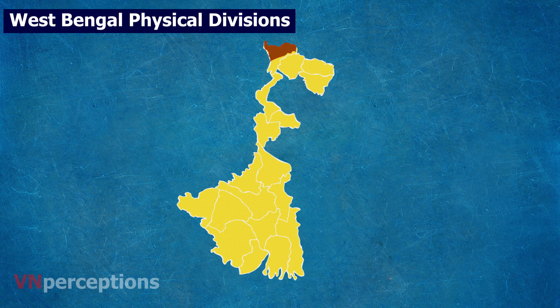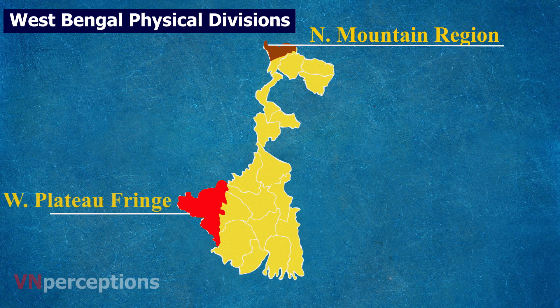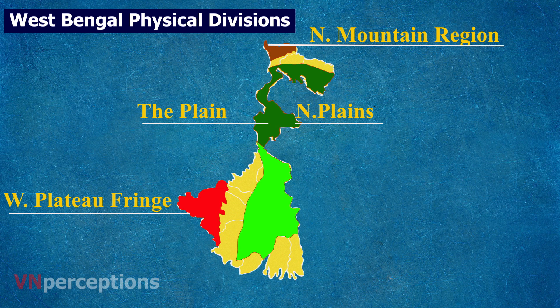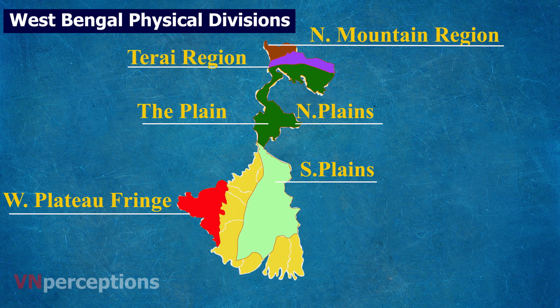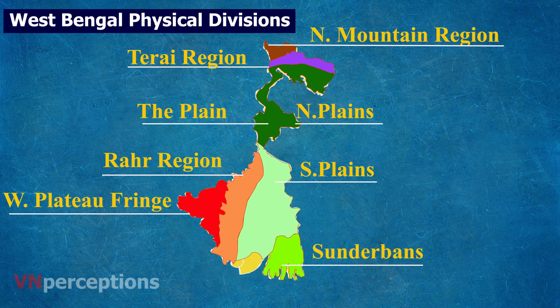The seven physical regions are: first, the northern mountain region; second, the western plateau fringe; third, the plains, that is the northern plains and the southern plains; fourth, the Tarai region; fifth, the Rarh region; sixth, the Sundarbans delta; and seventh, the coastal fringe.